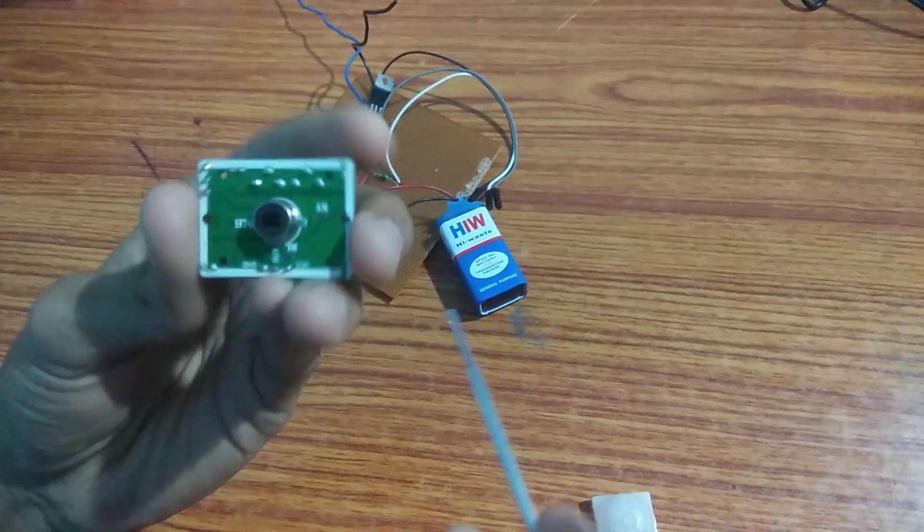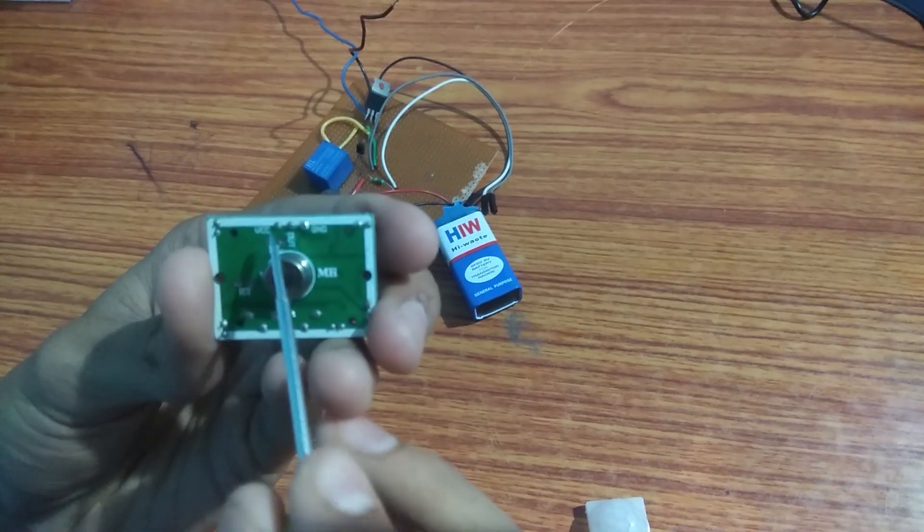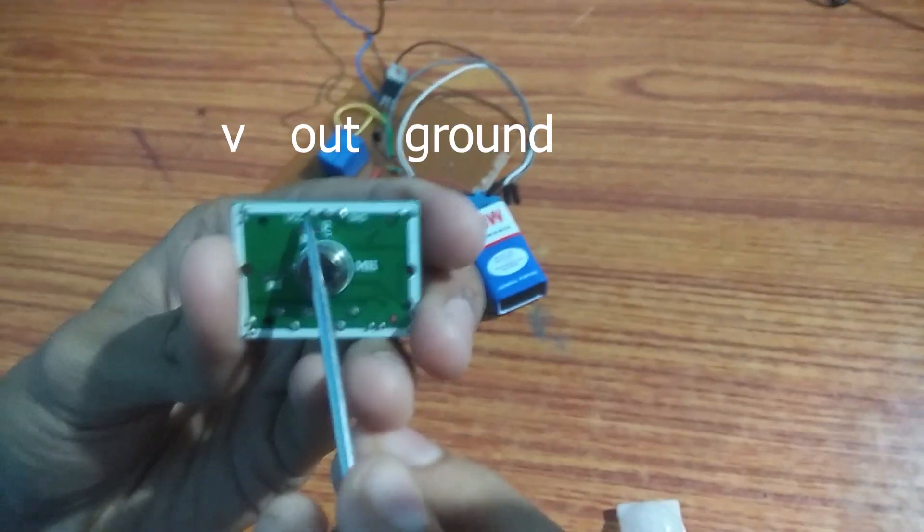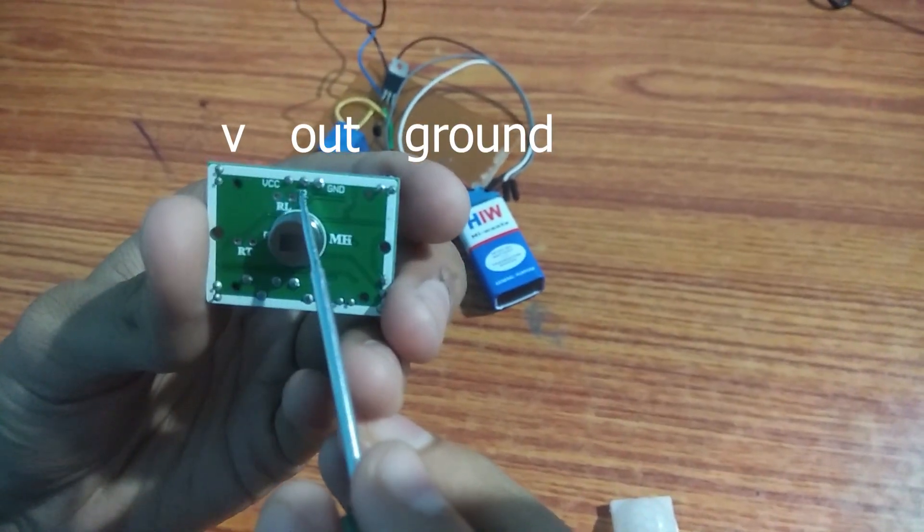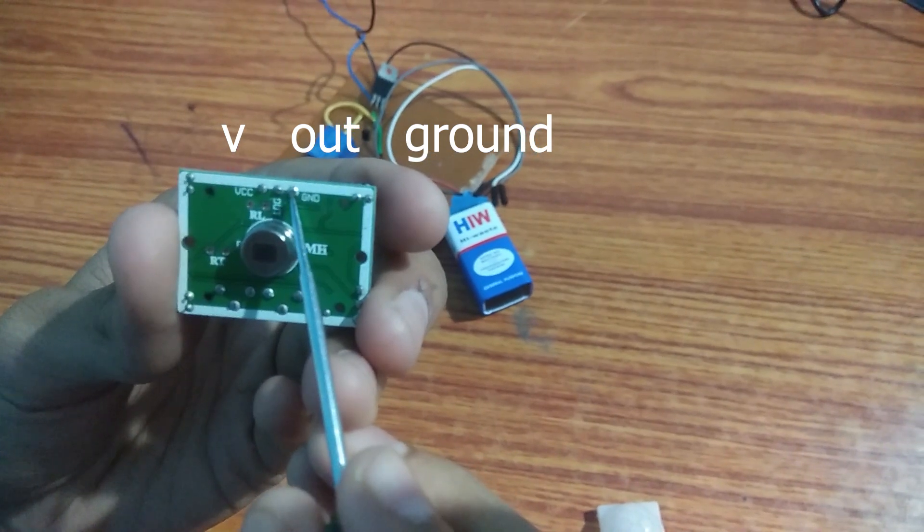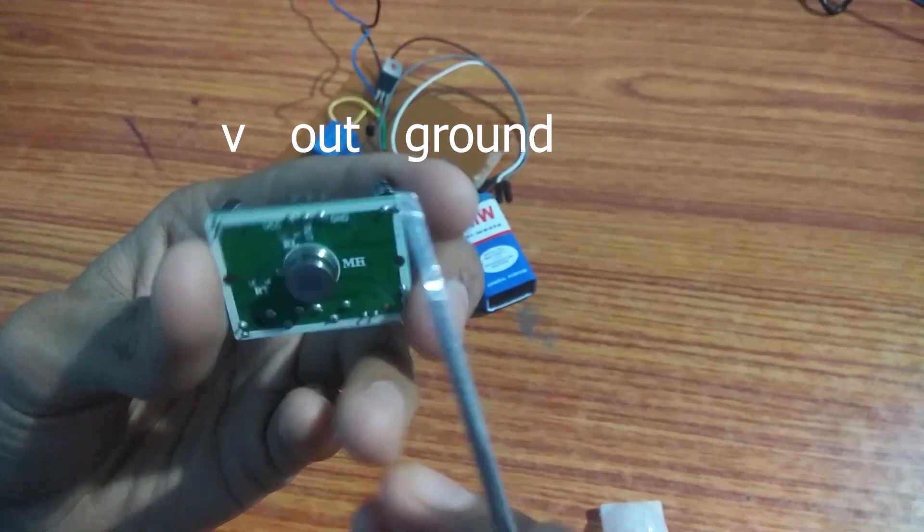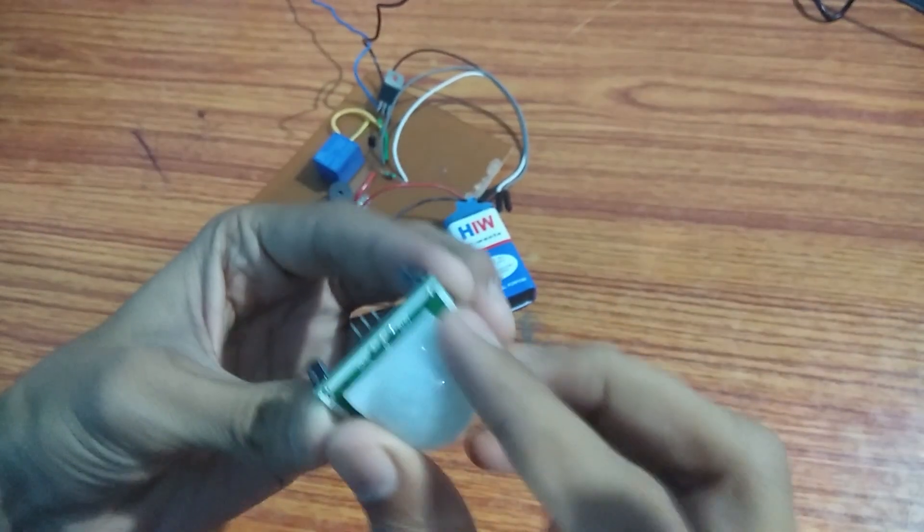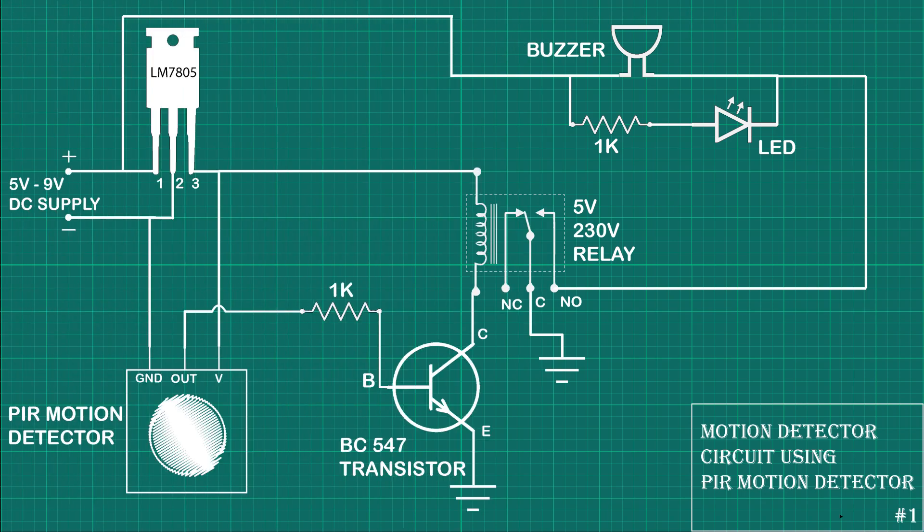The detector has three pins: VCC where we give 5 volt supply through the 7805 IC; output pin which basically sends a high signal of nearly 3 volts when motion is detected and sends 0 volt signal when there is no motion; and I have used a transistor as a switch. So whenever the detector detects motion, it sends a high signal to the base of the transistor connected with the output pin of the detector.